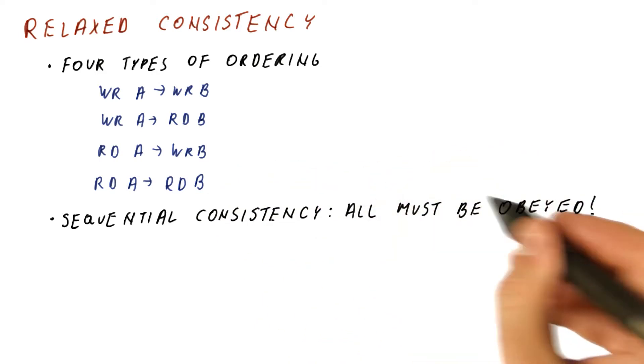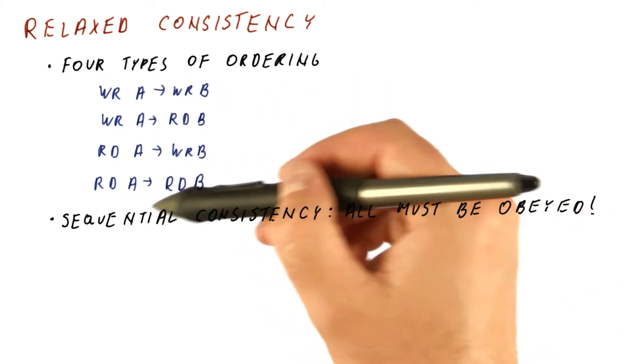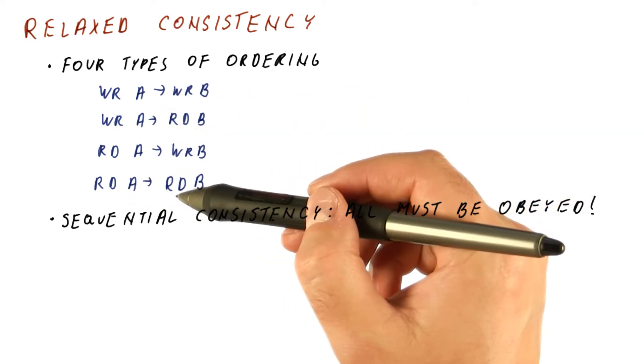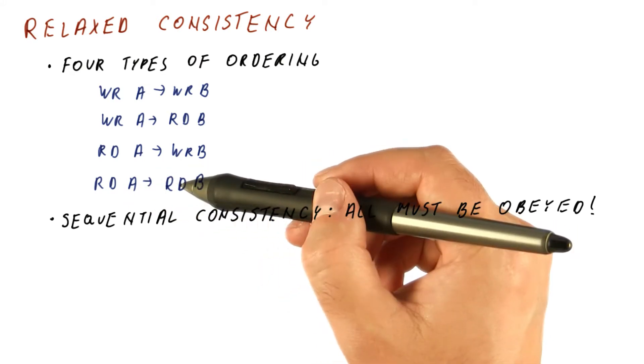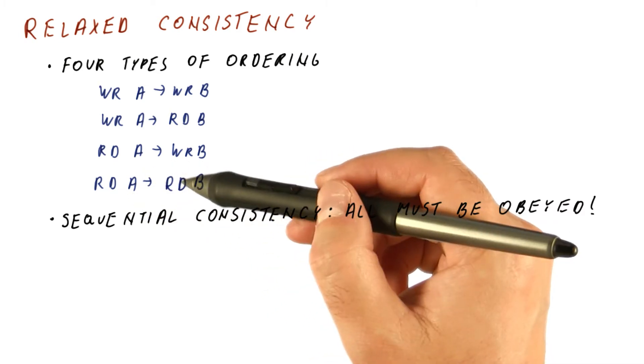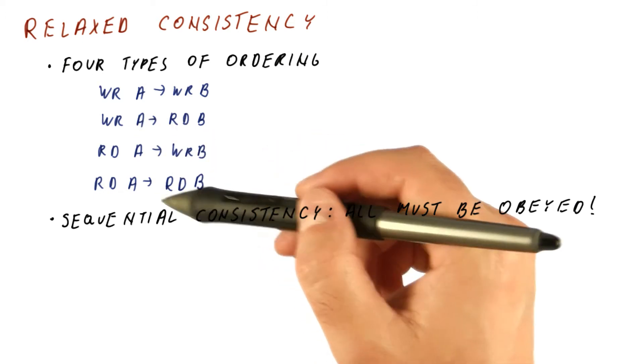Sequential consistency says that program execution must obey all four types of ordering at all times. If we reorder something, we have to fix any situation where that would result in a different outcome than program order execution. We are allowed to reorder things, but we have to always hide that from anyone being able to see it.